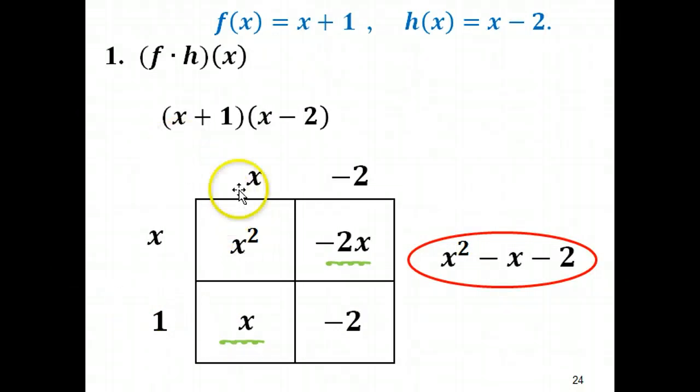Just by creating the box method. And then again, it's just basically writing out a binomial times a binomial. So it'll be a 2 by 2 box. And then fill in each one of these, then combining like terms. See you next time.